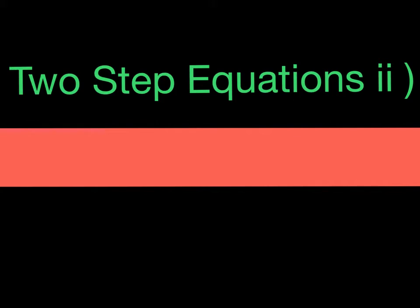Hello everyone! So far in our previous one and two step videos, the equations we solved were quite straightforward. Where it can get a bit confusing is when we change the position of the unknown and we introduce negative numbers, fractions, or decimals. However, we still go about solving the same way. We perform inverse operations to both sides one at a time.